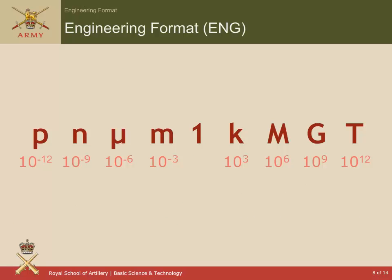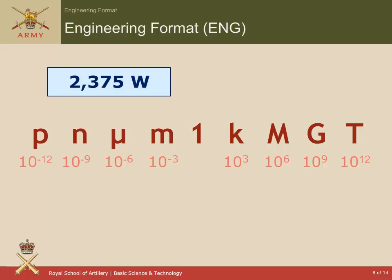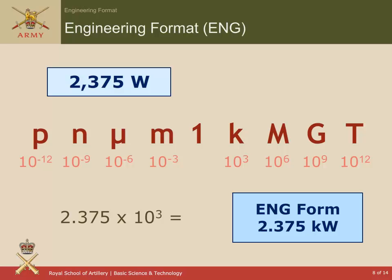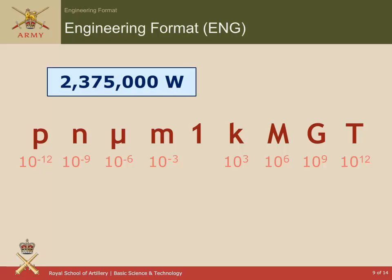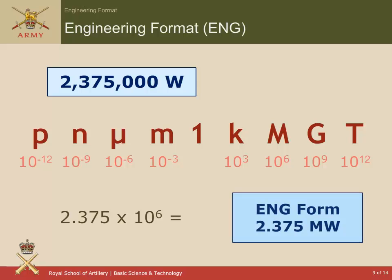I'm just going to go through a few examples of converting a number in non-engineering format into engineering format. Here we have 2,375 watts. If we want to convert that into engineering format, it would be written as a number between 1 and 999 times a power of 10. So, between 1 and 999, we're going to write 2.375 times 10 to the power of 3, which we could call 2.375 kilowatts — and I make the point to use a lowercase k for kilo. Here we've got quite a large number, 2,375,000 watts. In engineering format that is 2.375 times 10 to the power of 6, or 2.375 megawatts.